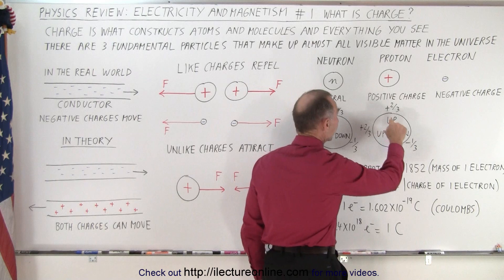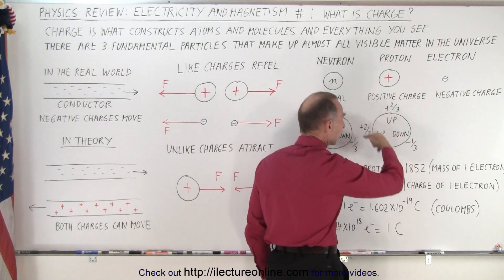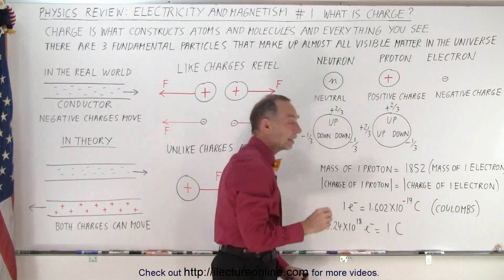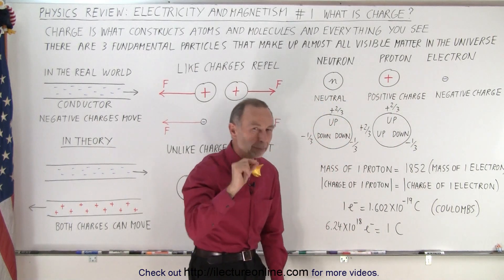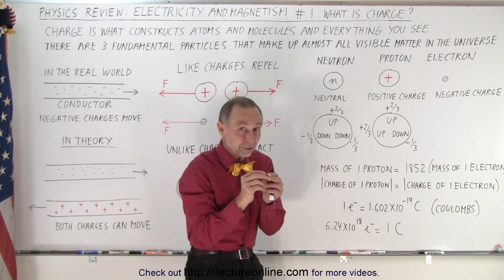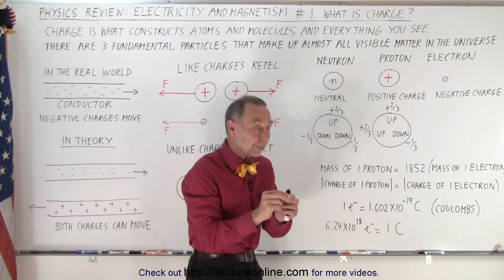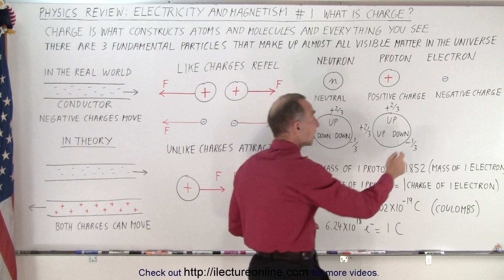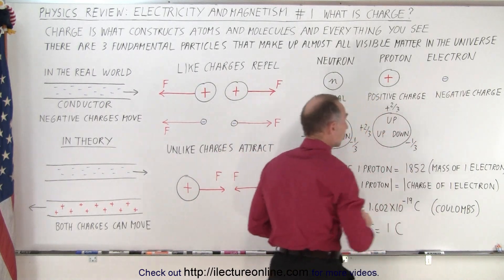Protons have two up quarks and one down quark. So when you add up all those charges, that comes up to a positive one charge. And electrons, they're small unitary particles, as far as we know. They're not consistent of any even sub-smaller particles than that. They're leptons, and an electron has by itself a negative charge.